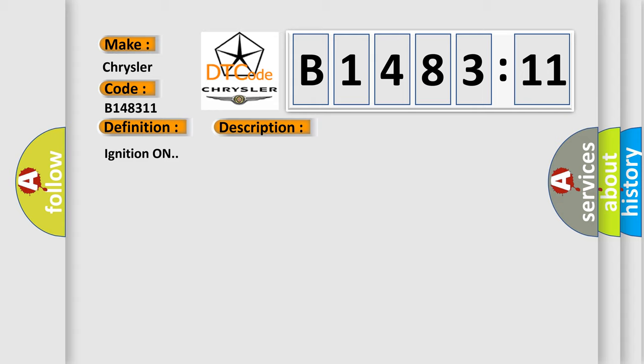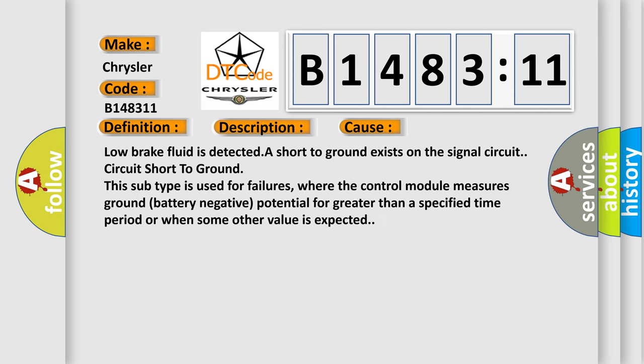Ignition on. This diagnostic error occurs most often in these cases: low brake fluid is detected, a short to ground exists on the signal circuit. Circuit short to ground. This subtype is used for failures where the control module measures ground battery negative potential for greater than a specified time period or when some other value is expected.